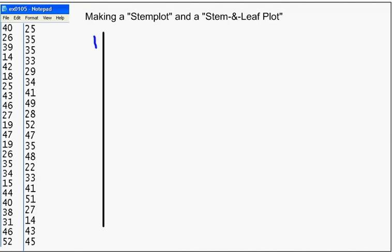Now what I'm going to do is make split stems. In other words, two places for tens digits. So any number that's between 10 and 14 will go in this first one. And anything that's 15 to 19 will go in this second stem.